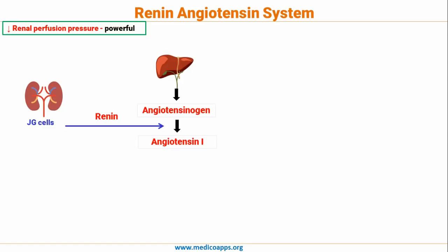The decrease in renal perfusion pressure is one of the most potent factors that contribute to the production of renin. Whenever blood pressure falls, either due to a decrease in blood volume or any other factor, this will lead to a decrease in renal perfusion pressure. Once renal perfusion pressure goes down, JG cells will be given a signal to produce more renin.